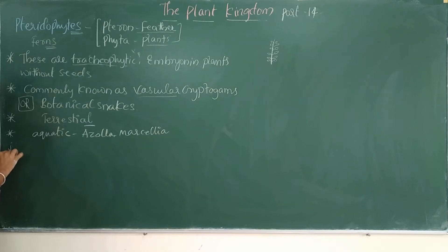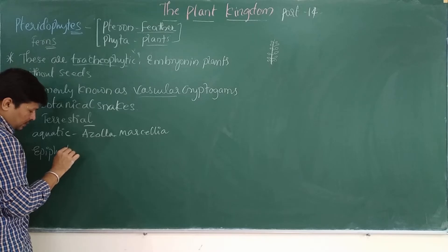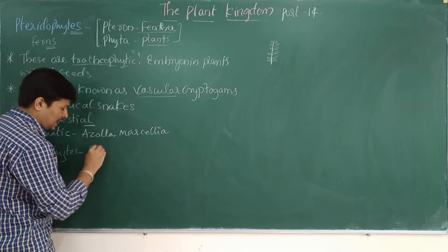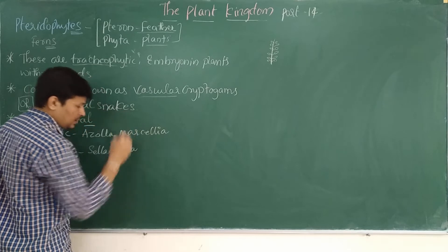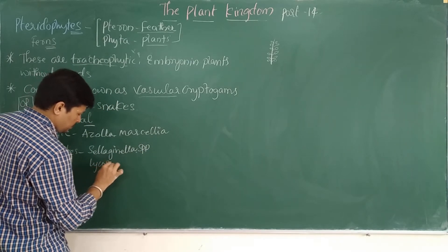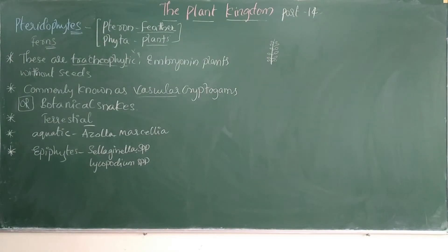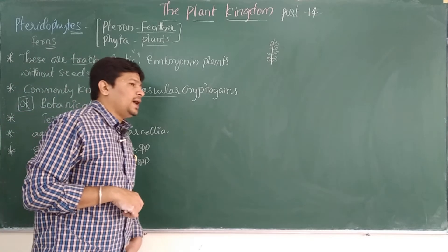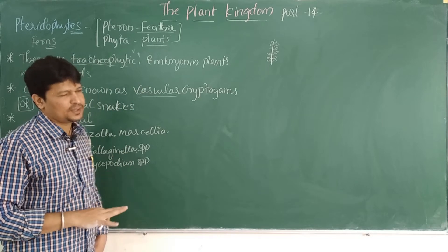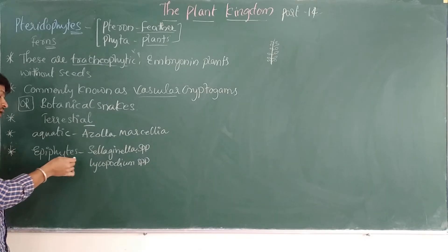There are also certain members that grow over other plants — they are epiphytic in nature. Epi means above, phytic means plants. Examples include Selaginella and Lycopodium species. Lycopodium phlegmaria is one such epiphytic species that grows over the bark of other plants.